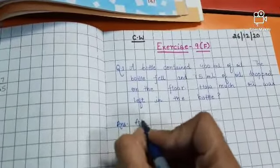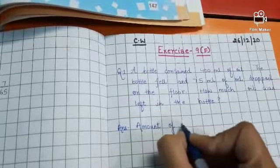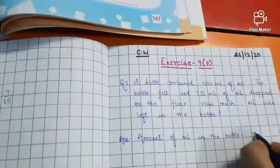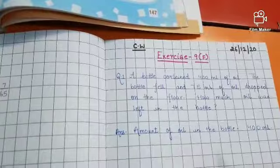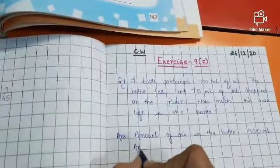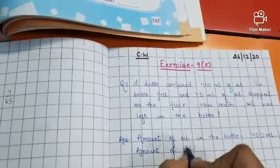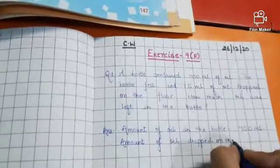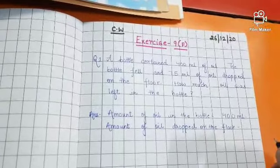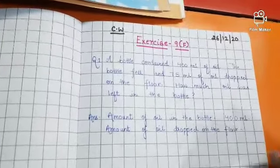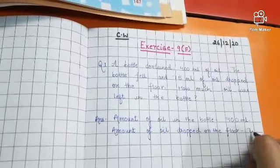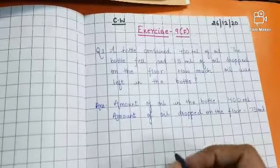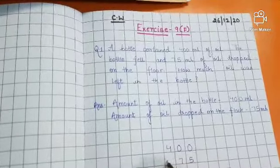Write amount of oil in the bottle. Amount of oil dropped on the floor, 75 ml. Now we will subtract 75 from 400. So write 400 and subtract 75 from it.